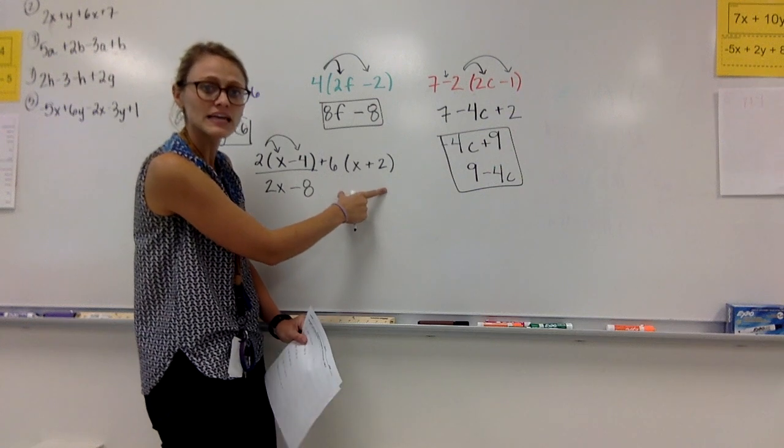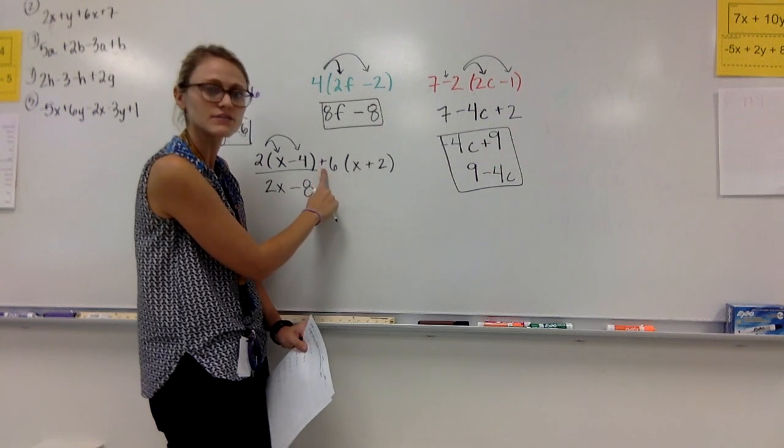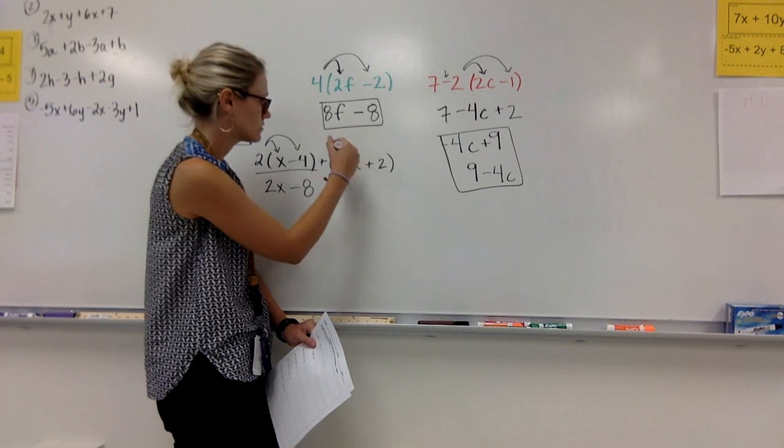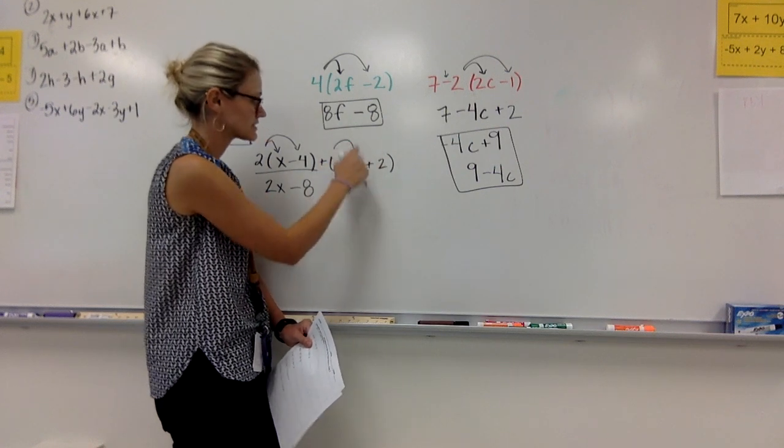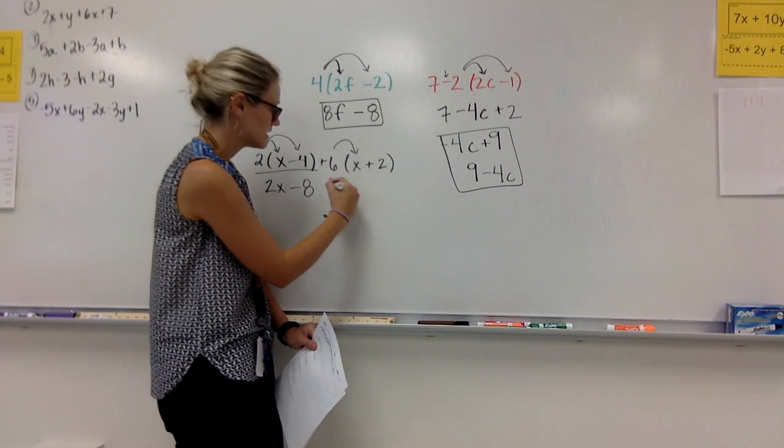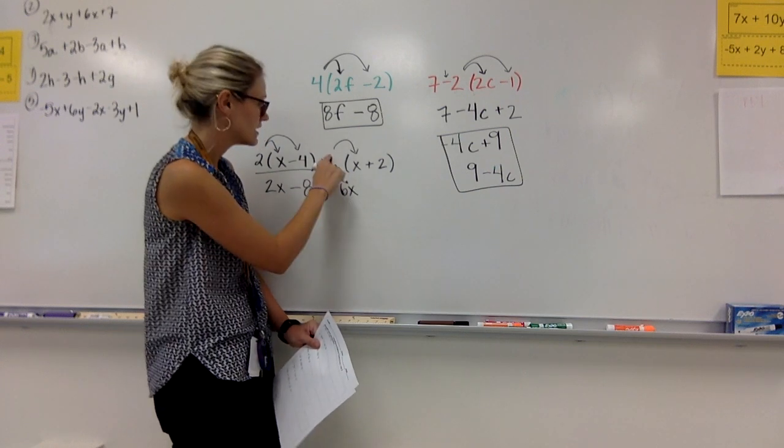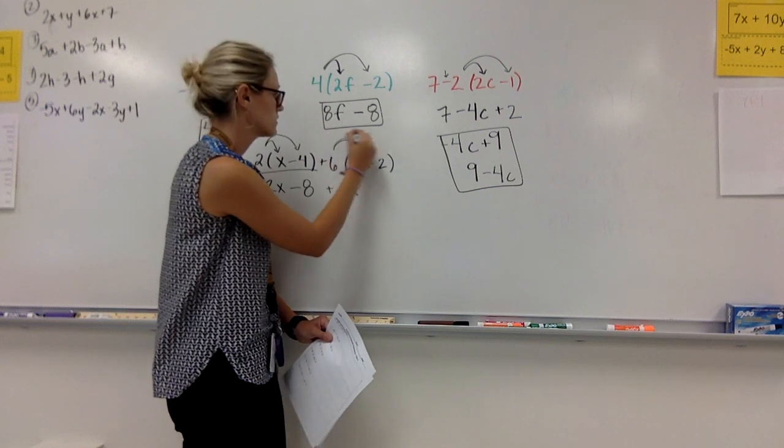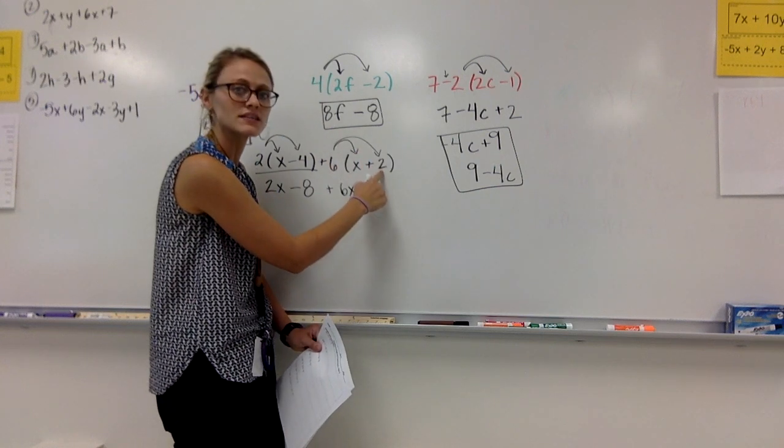Moving over here. I'm going to distribute again. I have a positive 6 being distributed to an x and a 2. 6 times x is a positive 6x. Positive 6 times positive 2.